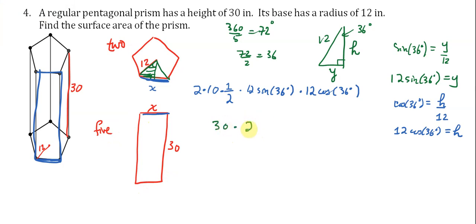But remember, X is just twice the size of Y. So it's 2 times 12 sine of 36. And there are five of these rectangles altogether. So we multiply all that by 5.